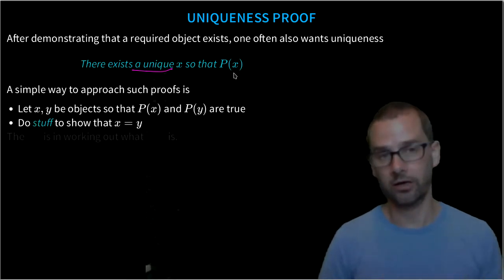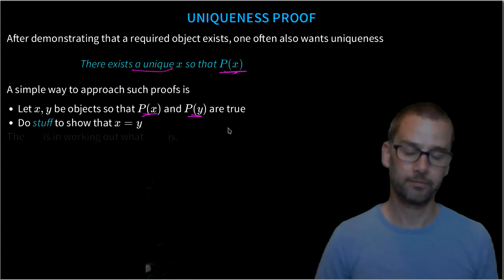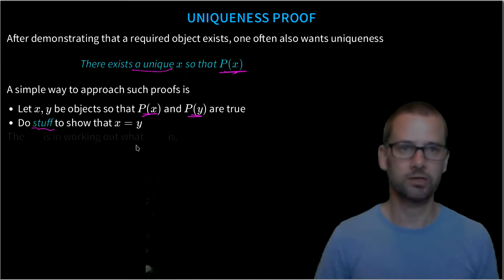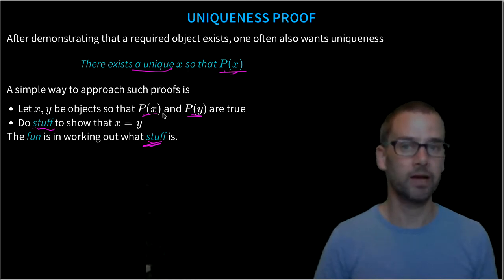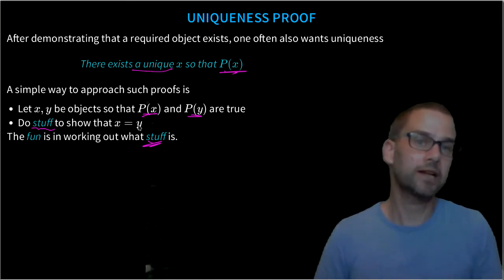After we've proved that an object exists, let's let x and y both be objects that make P(x) true. Let's prove that at least one of these exist and then assume that P(x) and P(y) both make things true. Then what we need to do is we need to do stuff, and I'm not going to say what stuff is. That's almost certainly where the fun of the proof is. But after we've assumed that x and y both make P(x) true, we try to show that x has to be equal to y, because that means as soon as we have multiple objects that make P(x) true, they all actually have to be the same object.